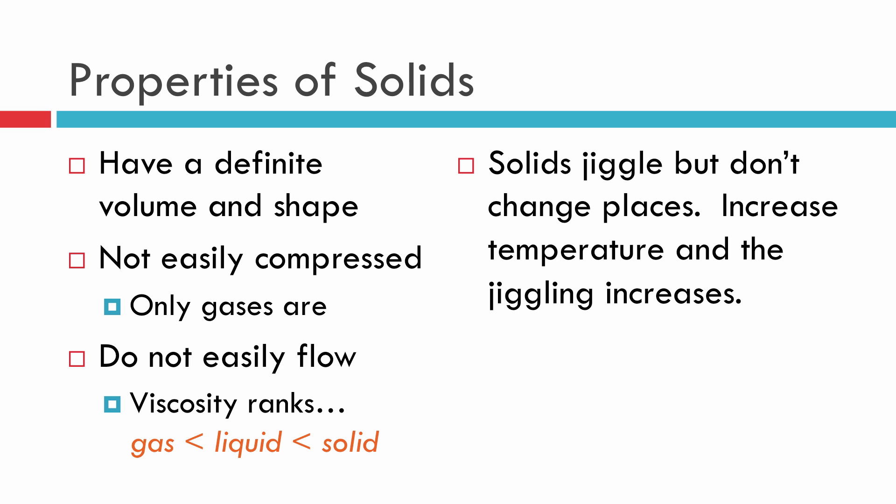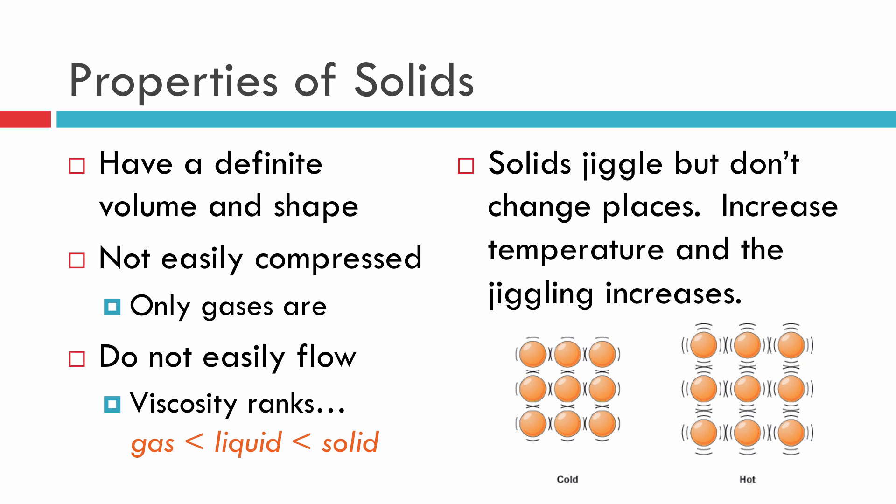Solids, by the way, jiggle around in place. They don't really change their neighbors too often. They mainly just jiggle around in place, and that jiggling will increase as temperature increases. So you can expect that as temperature increases, this jiggling can get large enough that you might be able to loosen the intermolecular forces and create that solid to liquid transition. And if the pressure is just right, you can also go from a solid to a gas directly, and that's called sublimation.